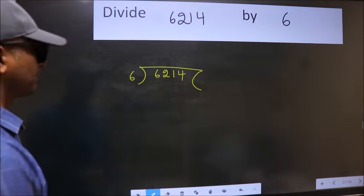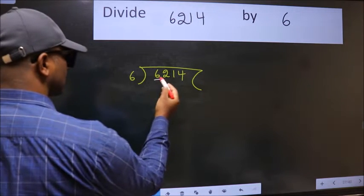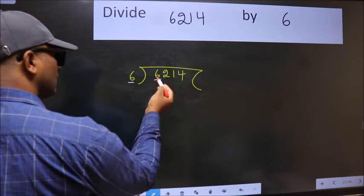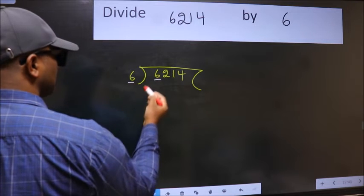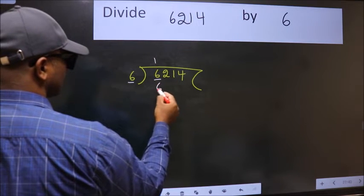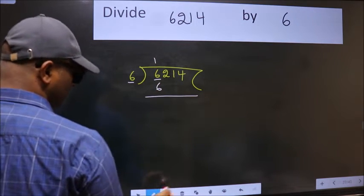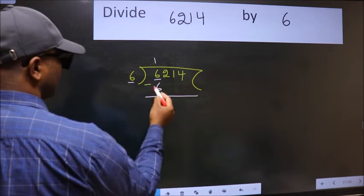Next. Here we have 6 and here 6. When do we get 6 in the 6 table? 6 once is 6. Now we should subtract. We get 0.